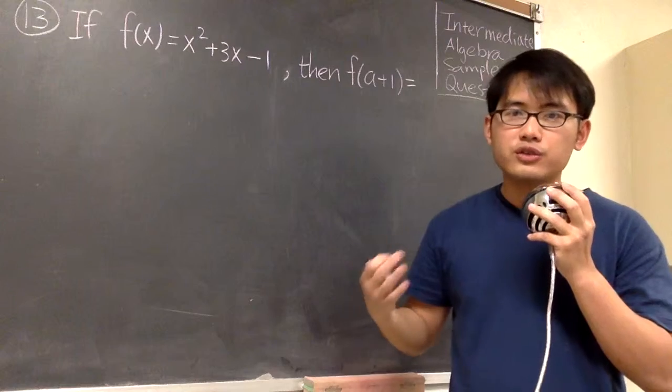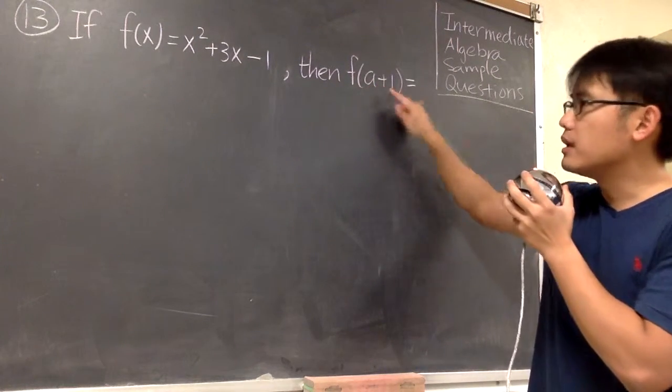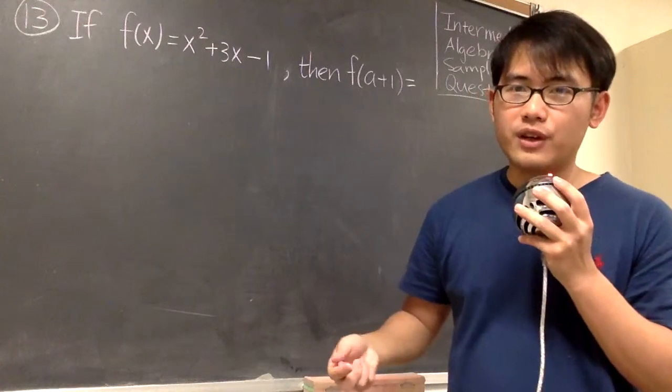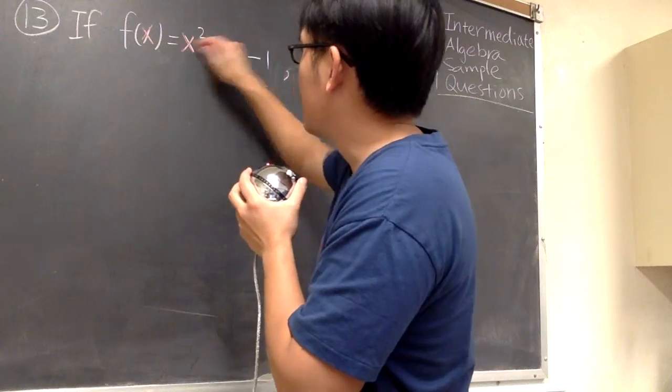This is about function composition, meaning that we are going to plug in the a+1 into all the x that we have from the original function. Let me just change all the x into red first.